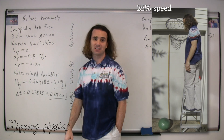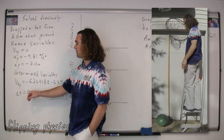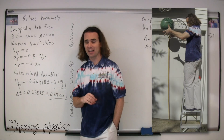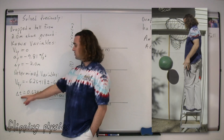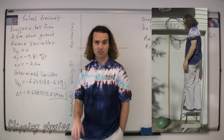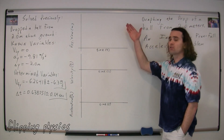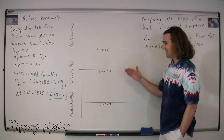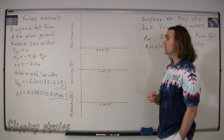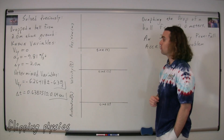We used our uniformly accelerated motion equations to determine the final velocity in the y direction was approximately negative 6.3 meters per second, again negative because it was going down, and the change in time was approximately 0.64 seconds. What we're going to do today is we are going to graph the position, velocity, and acceleration as a function of time graphs for the drop of this ball as it moves down the 2.0 meters.